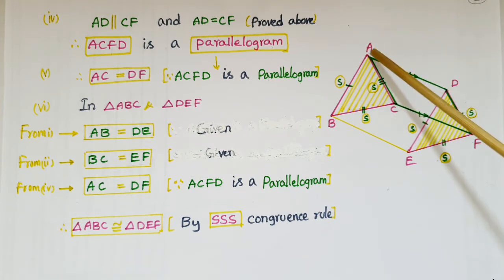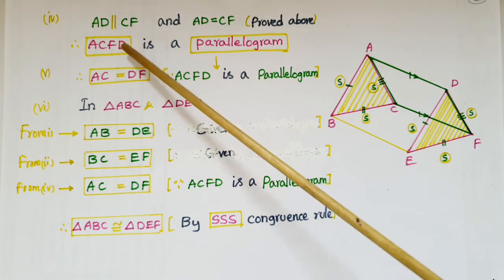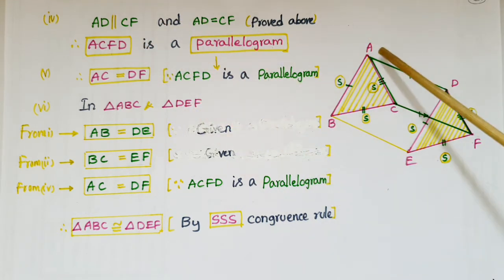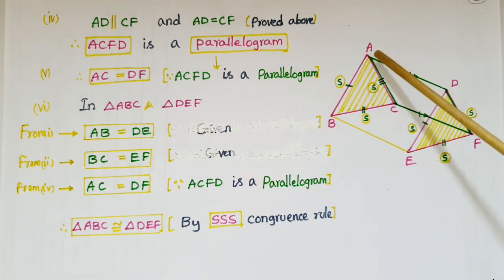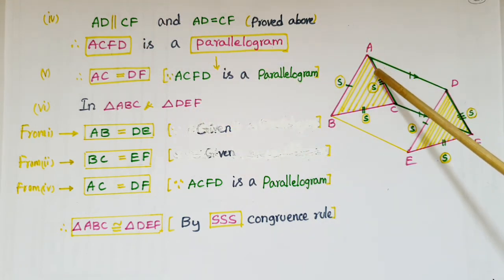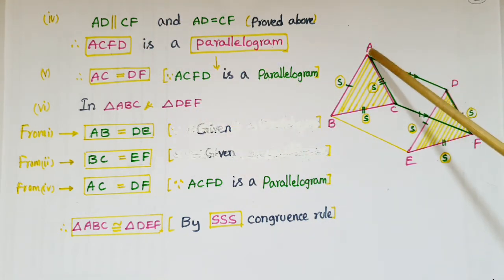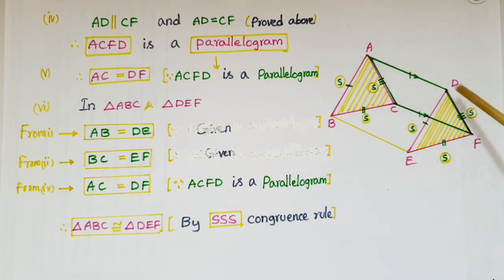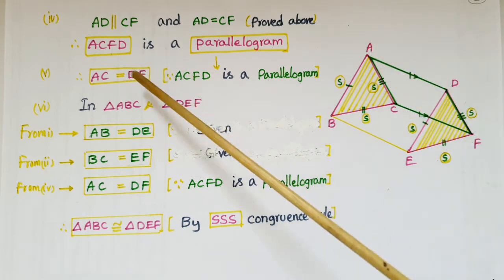For the fifth part, we have to prove that AC is equal to DF. We have just proved that ACFD is a parallelogram. We know that opposite sides of a parallelogram are equal, so AC is equal to DF.